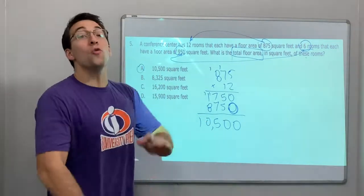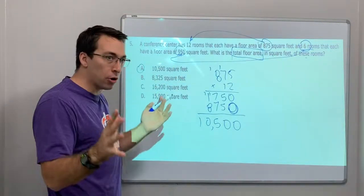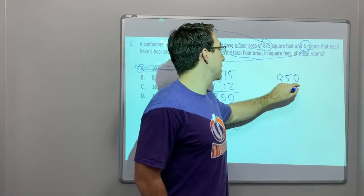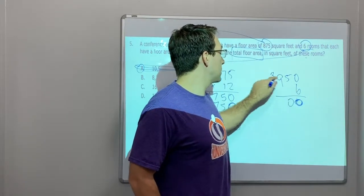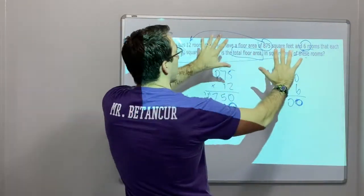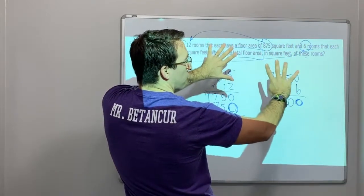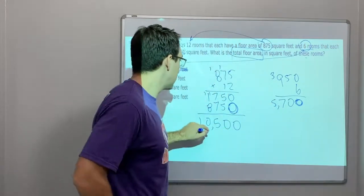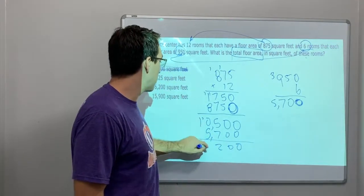Hey, 10,500 might seem like your answer — wrong! They generally give you an answer that's only part of the question, because we still have the six rooms to add. So 950 times 6: 6 times 5 is 30; for 9 times 6, using the multiples-of-nine trick — count to the sixth multiple: 54 — plus 3 is 57. So 6 times 950 is 5,700.